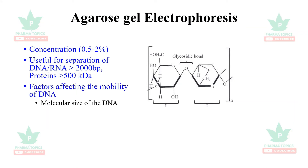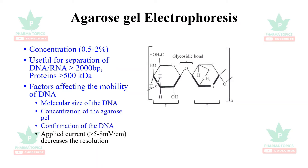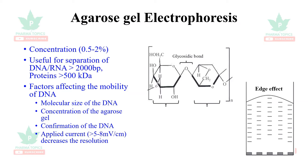Factors affecting the mobility of DNA are: the molecular size of the DNA, concentration of the agarose gel, conformation of the DNA, and applied current, which is around 5 to 8 volts per centimeter — if greater than that, it decreases the resolution. A problem encountered in agarose gel electrophoresis is the edge effect, because the middle of the gel has uniform electric current and pH, but the edges have differential pH and charge.